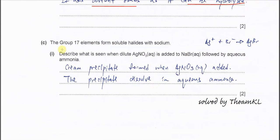Part C. Group 17 elements form soluble halides with sodium. Describe what you see when dilute silver nitrate is added to sodium bromide. So very easy. You see the cream precipitate because silver bromide forms.